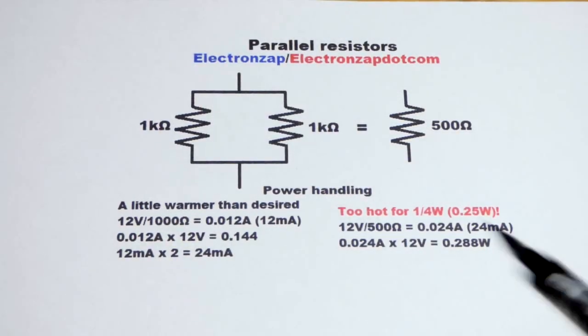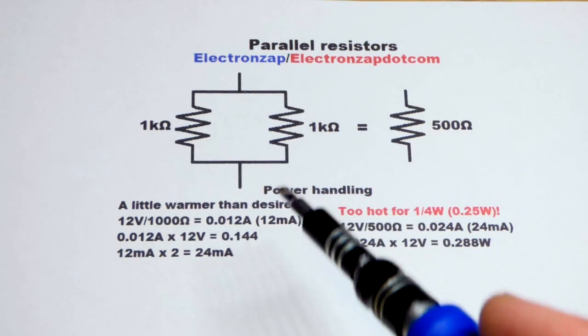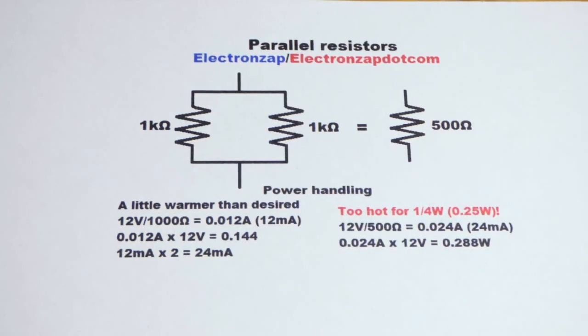In this video we're going to look at parallel resistors. The main property of parallel resistors is that you end up with an equivalent of less resistance.